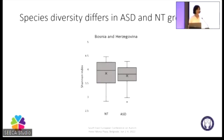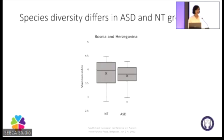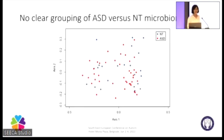For the bioinformatic analysis — which is very fresh, with results received about one month ago — the first thing we looked at was alpha diversity, which is simply a measure of how many species you have in your gut. Presented here using the Shannon index, which accounts for both number of species and their abundances, we found that children with autism spectrum disorder in Bosnia and Herzegovina have fewer bacterial species than neurotypical children. In the second step, we performed a PCoA analysis — the red dots are children with ASD, blue dots are neurotypical — and while I had hoped to see clear clustering, we did not, meaning the microbiomes overlap considerably.